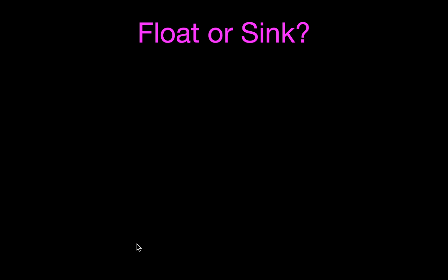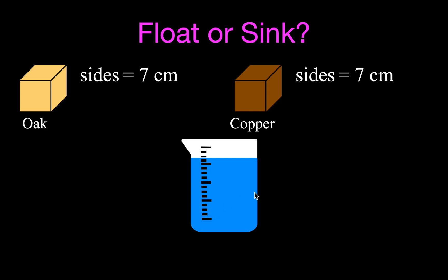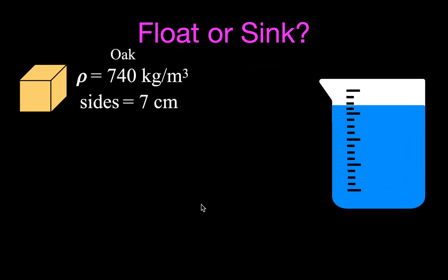Now let's talk about sinking and floating. We have two objects: a cube of oak wood and a cube of copper, each with sides of 7 centimeters. We want to know whether each will float or sink when placed in a beaker of water. Most people know wood floats and copper sinks — and that comes down to density. The density of water is 1,000 kg/m³; oak is 740 kg/m³, which is less than water so it floats; copper is greater than 1,000 kg/m³, so it sinks. But we can also demonstrate this using the buoyant force, which is what we'll do in this video.